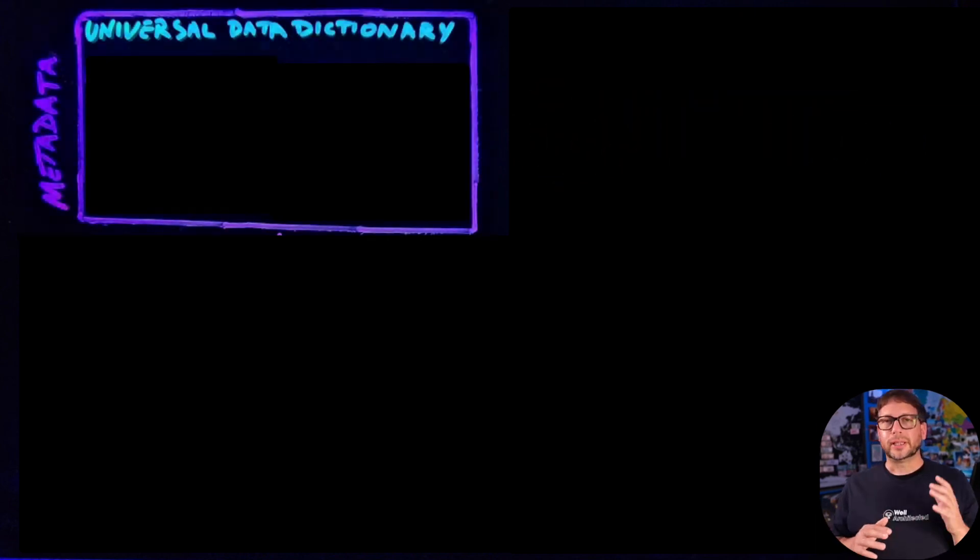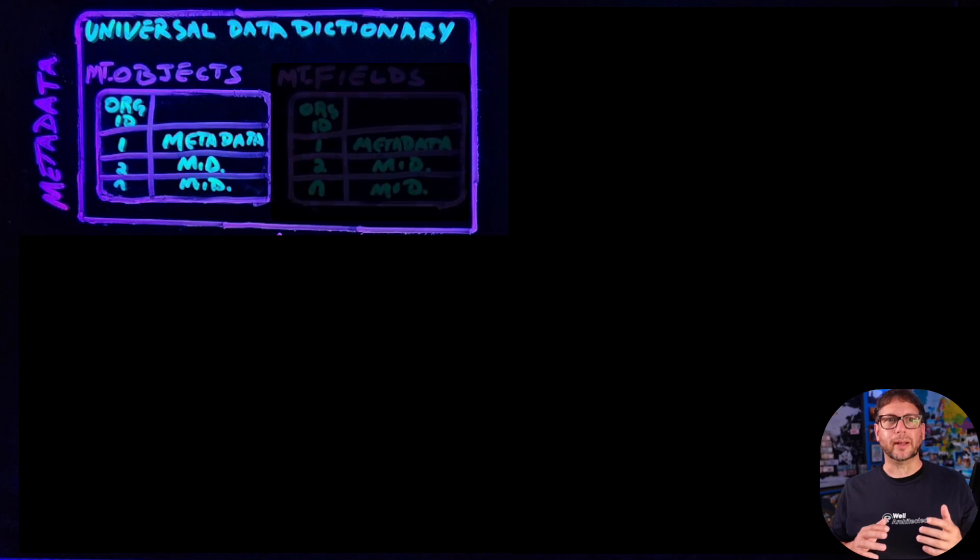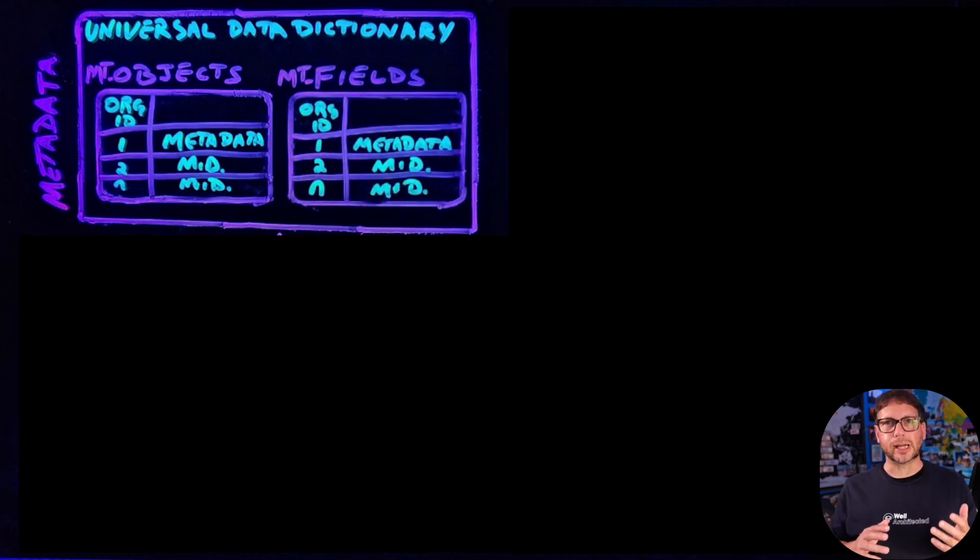The platform stores this in a few database tables known as a universal data dictionary. There's a table that stores metadata about the objects you define for an application, and another table that stores metadata about the fields you associate with each object. To help with performance, the platform uses metadata caches to retain the most recently used metadata in memory, improving response times and reducing disk I/O.